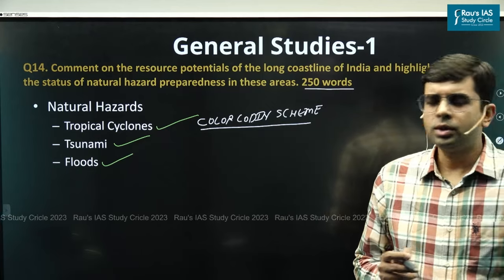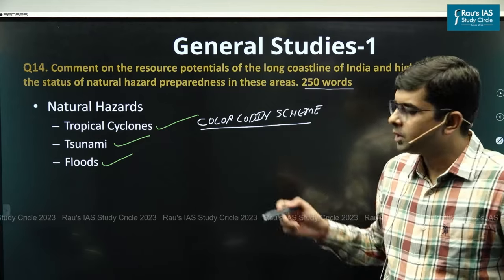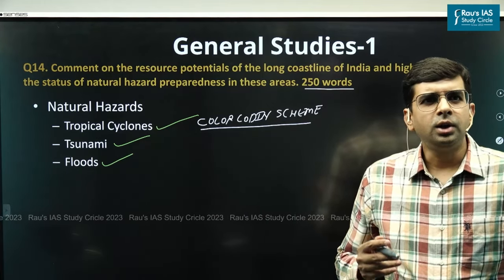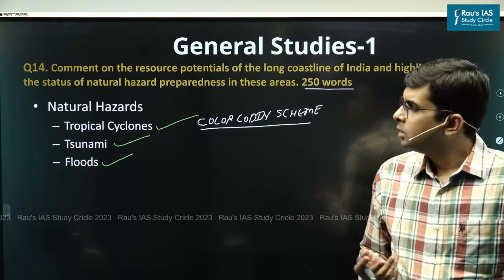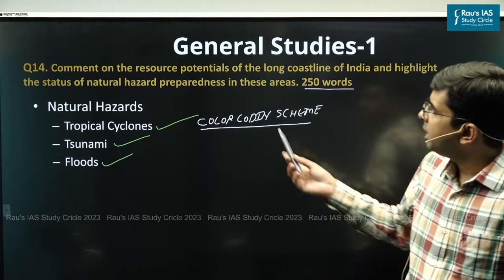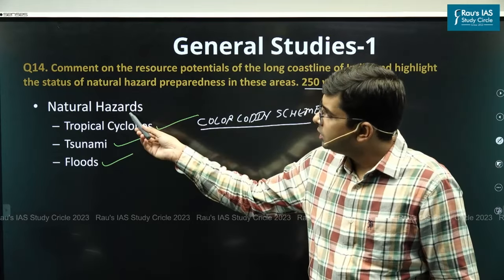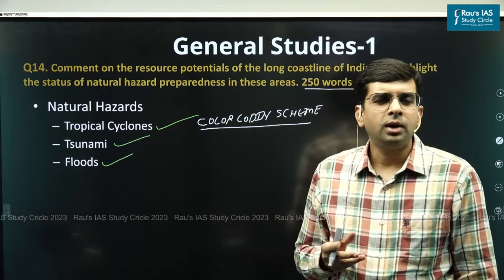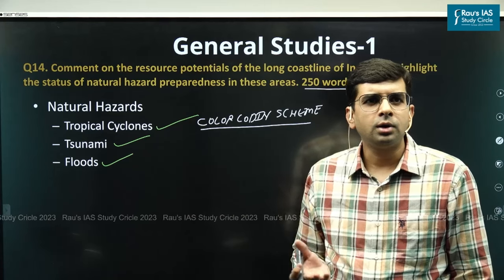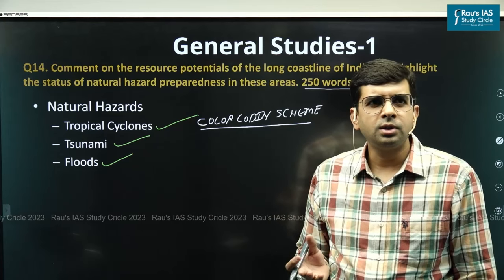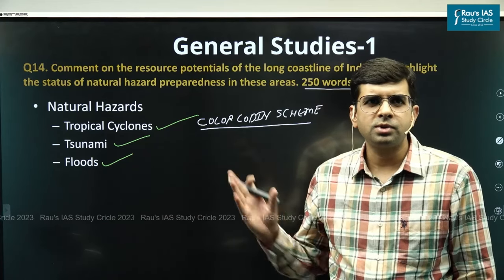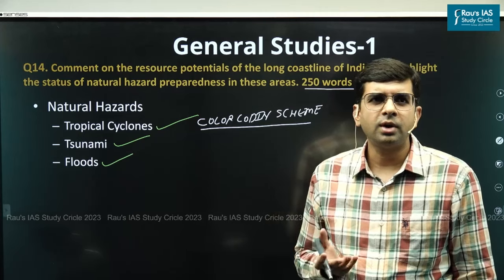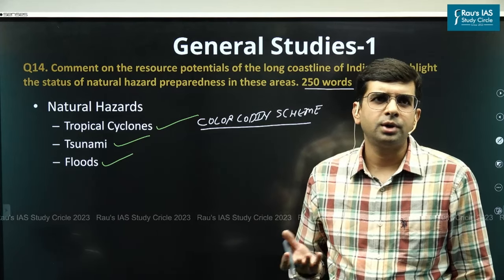In conclusion, we can mention that if India is better prepared to handle these natural hazards, it will greatly help in harnessing the resources present along the long coastline of 7,516 kilometres.